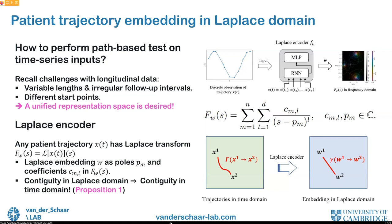A unified representation space is desired for effective comparison between patient trajectories. Inspired by the Laplace transform and the relationship between time and frequency domains, we introduce a novel Laplace encoder creating an embedding space with desired properties. Any patient trajectory can be represented by a fixed-length Laplace embedding including the poles and coefficients in its Laplace transform. Contiguity in the Laplace domain implies contiguity of patient trajectories in the time domain, enabling the path-based test in this unified space.